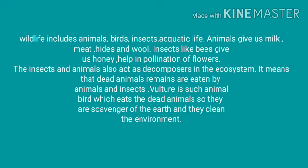Wildlife includes animals, birds, insects, and aquatic life. Animals give us milk, meat, hides, and wool. Insects like bees give us honey and help in the pollination of flowers. Insects and animals also act as decomposers in the ecosystem.